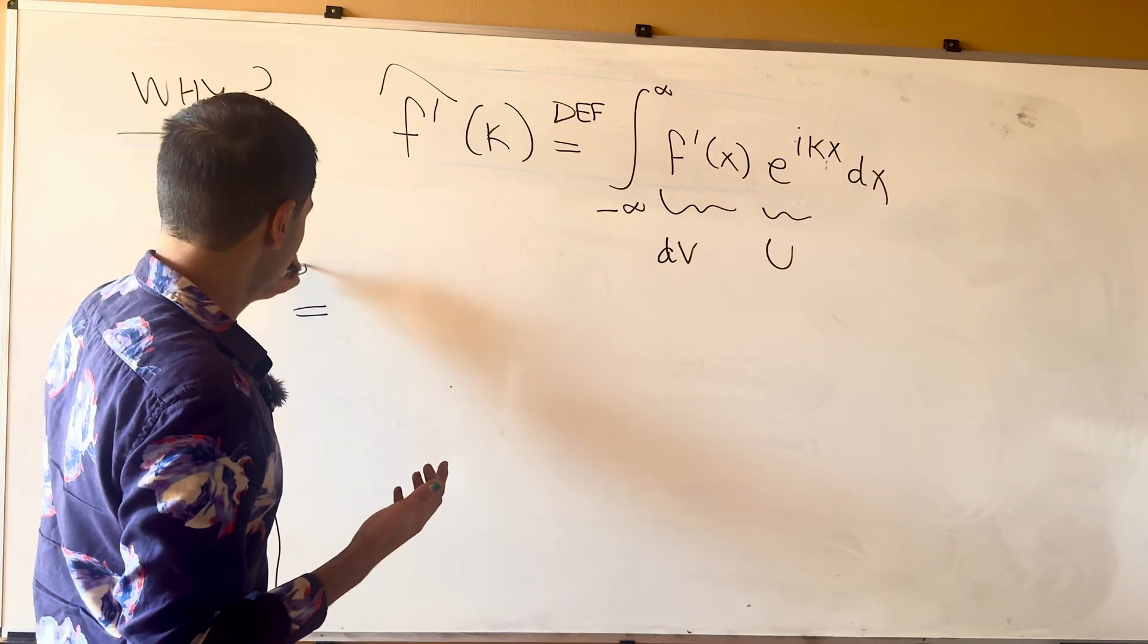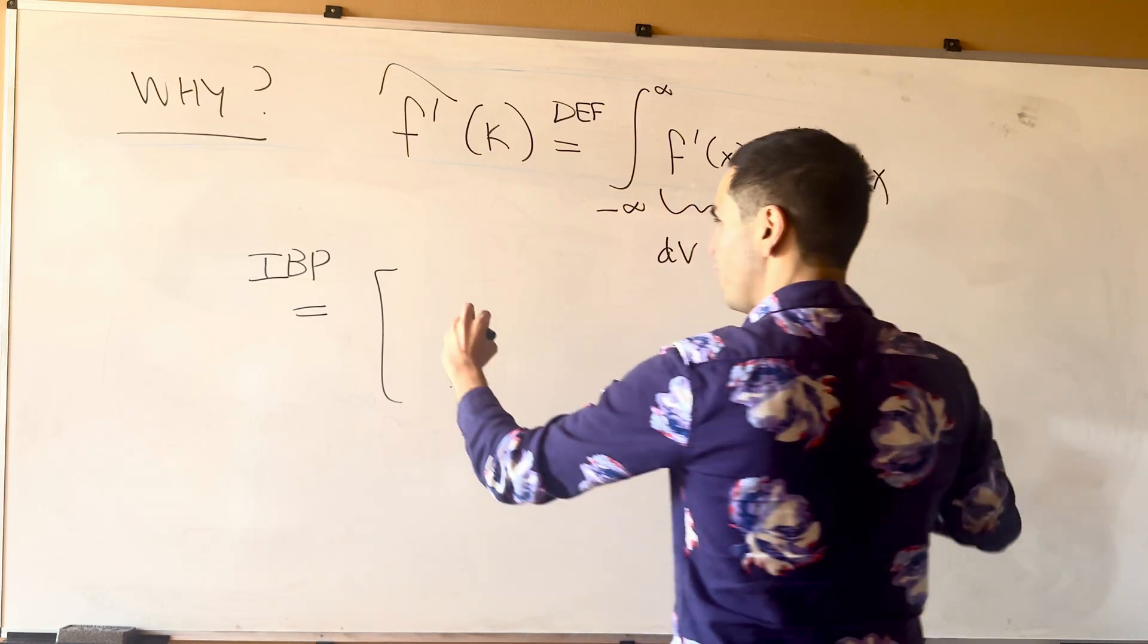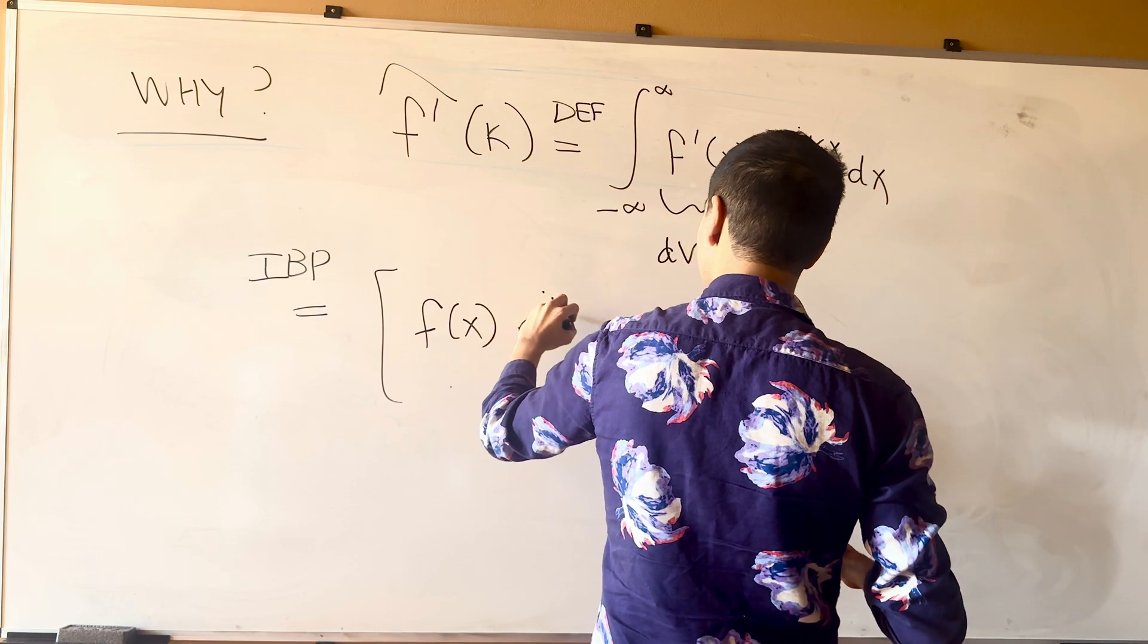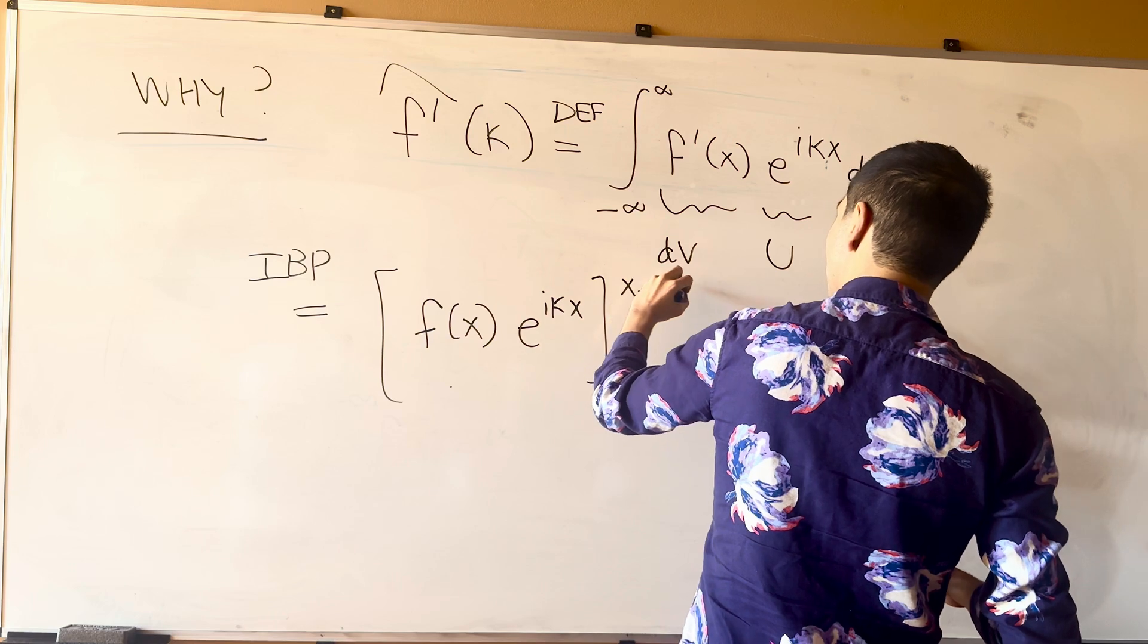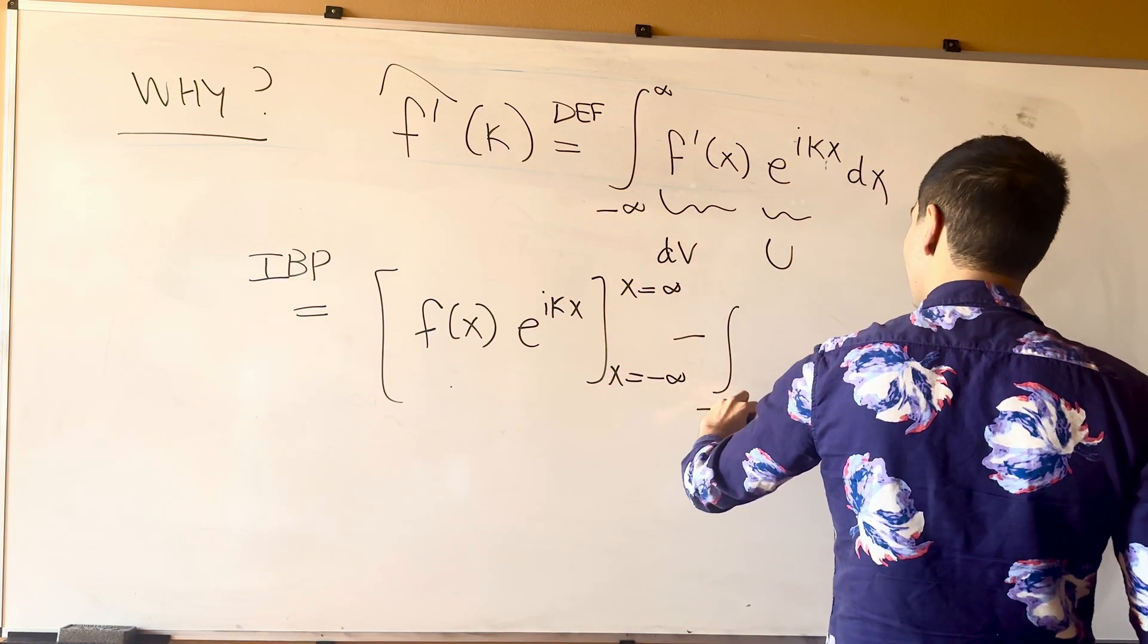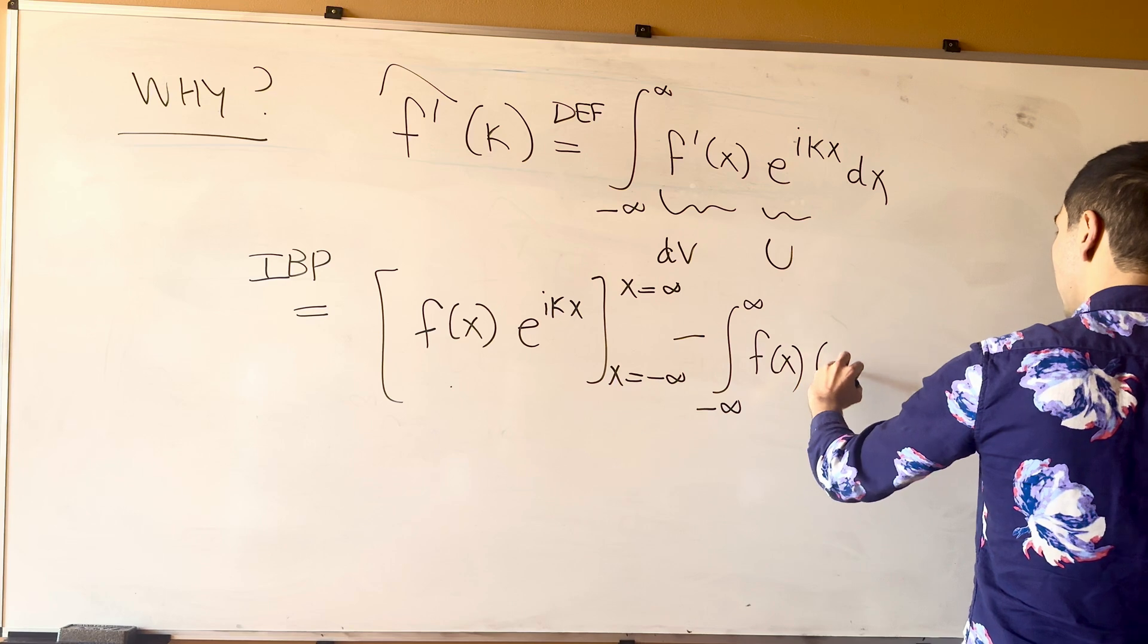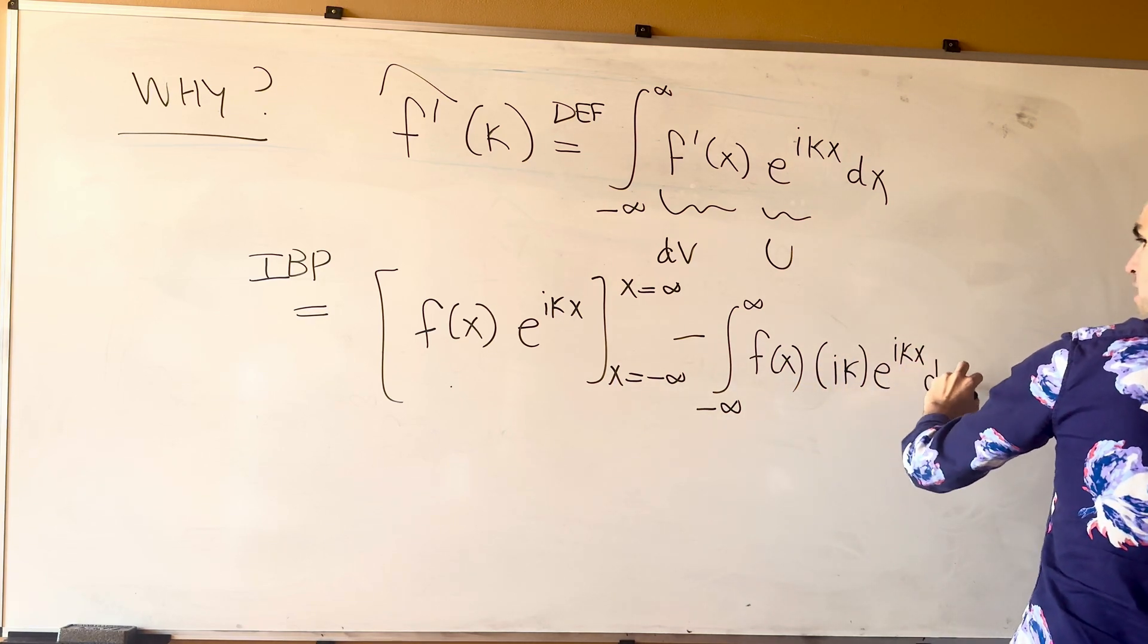And so if we integrate by parts, so v u, so v becomes f of x, u becomes e to the i kappa x, from x equals minus infinity to x equals infinity, and then minus, integral from minus infinity to infinity, of f of x, and then the derivative of that, so i kappa, e to the i kappa x dx.